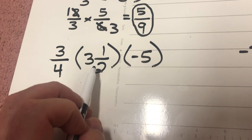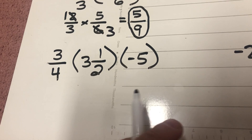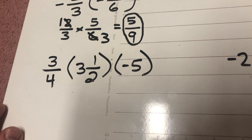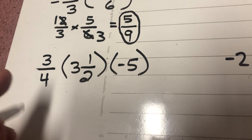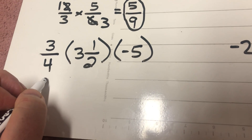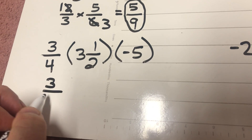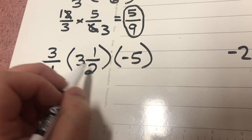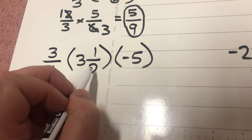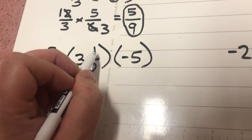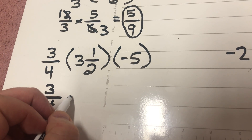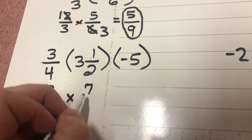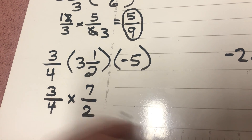Moving right along: three-fourths multiplied by three and a half multiplied by negative five. These numbers next to parentheses mean multiplication. My three-fourths can just stay a three-fourths. My three and a half I'm going to turn into a fraction: two times three is six, plus one is seven. So I'm going to have three-fourths times seven over two.